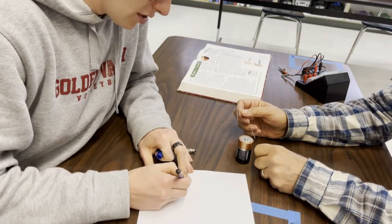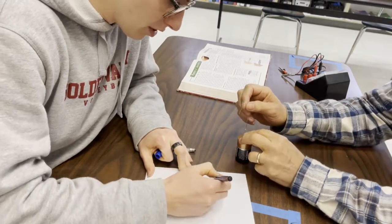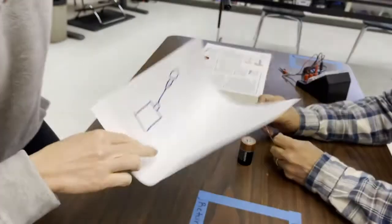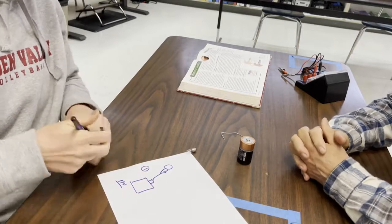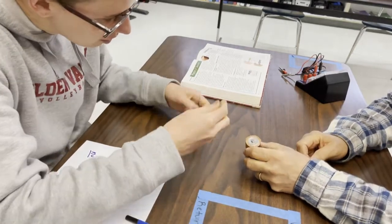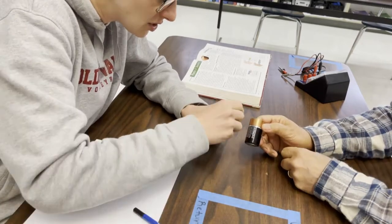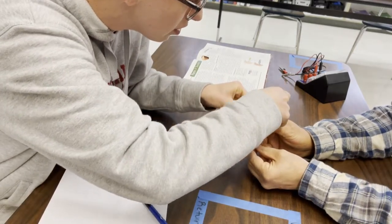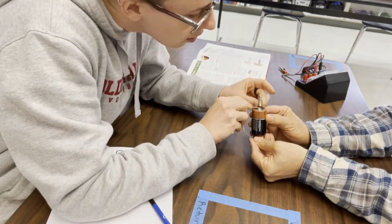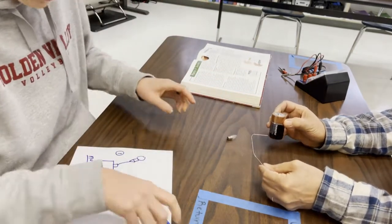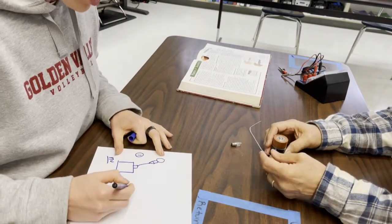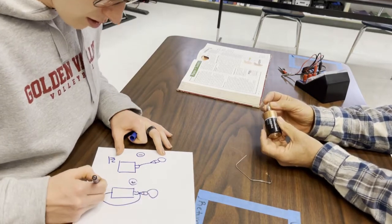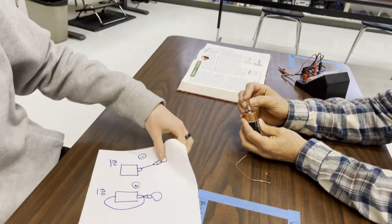So that first arrangement was the paper clip going like this and the bulb like that — it did not light, no light. Let's try attaching it to both sides — connected like that with the bulb in there. Still nothing. So that was also a no.